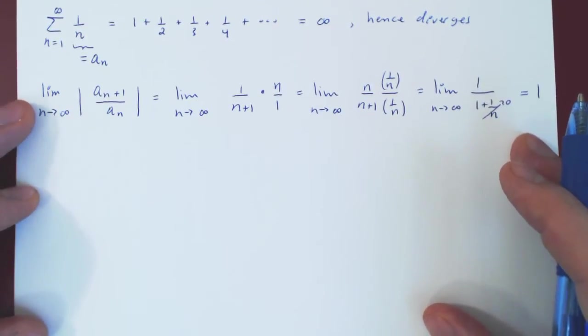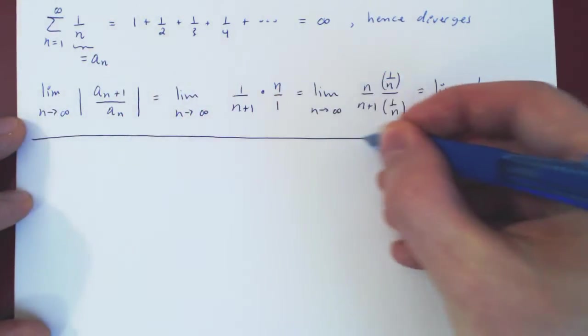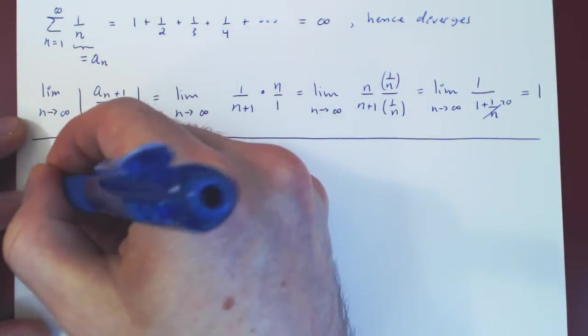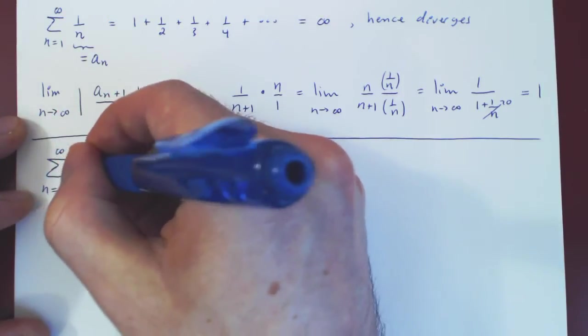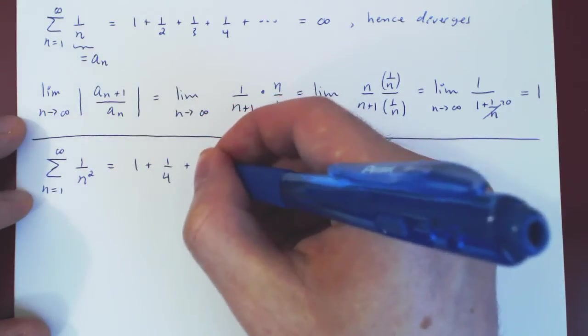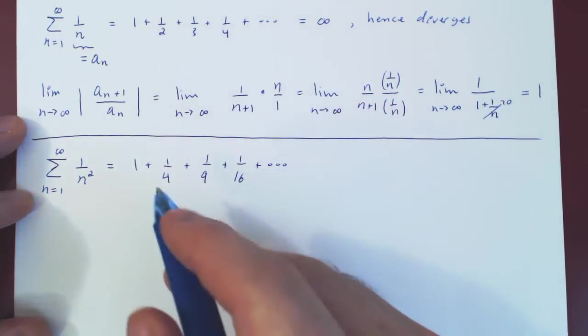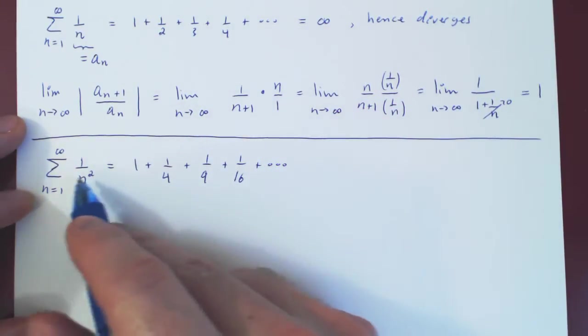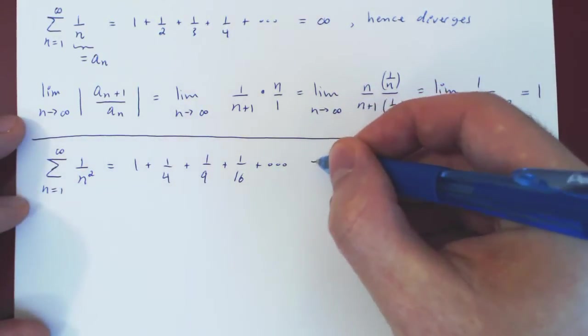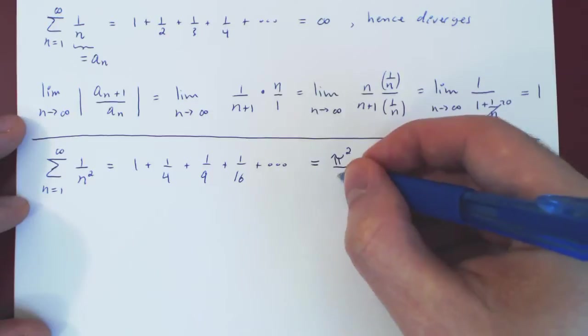Let's now look at the other P-series where P equals 2. As P is strictly larger than 1, this P-series converges. It's a very special P-series, if you recall, and this is again far from obvious. The series converges to pi squared over 6.